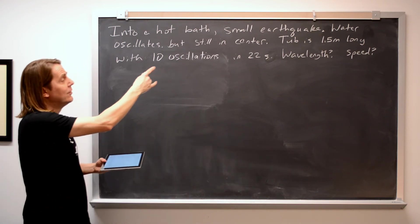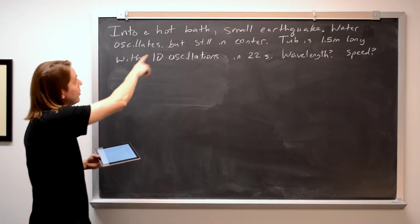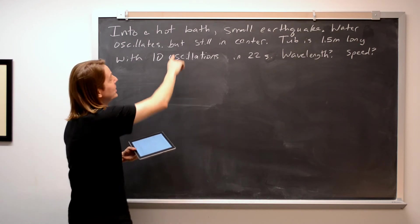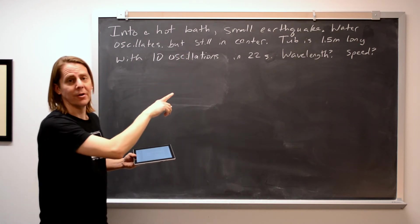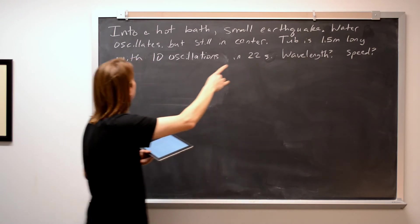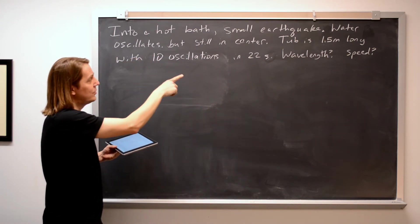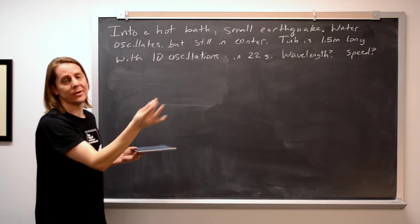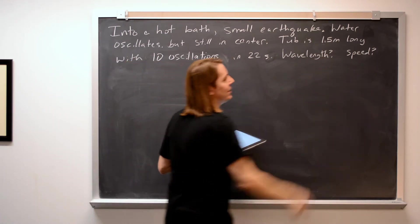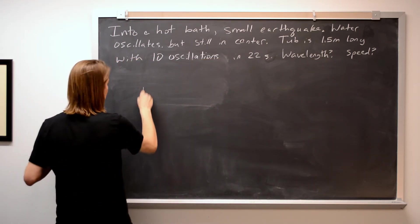You're taking a bath, and there's a small earthquake, and the water starts to oscillate in the bathtub, but it doesn't move in the center. The tub is 1.5 meters long, and you measure 10 oscillations in 22 seconds — because that's what you would do in an earthquake. You want to know the wavelength and speed of the waves on the surface of the water.